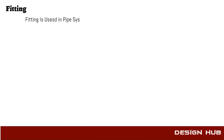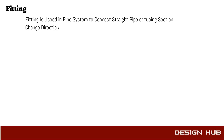Pipe fittings are classified according to use. Fittings are used for connecting the pipe or tubing sections, for changing the direction, for changing the diameter of pipe, and for making new branches, etc.